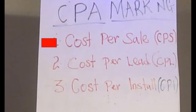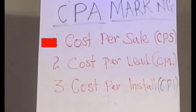The first commission type is cost per sale, also known as CPS. Cost per sale is simply the amount of commission you get paid when you make a sale — just like affiliate marketing. You get paid for every sale you make, and there is a specific fixed amount you're paid for each sale.